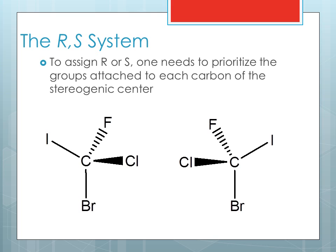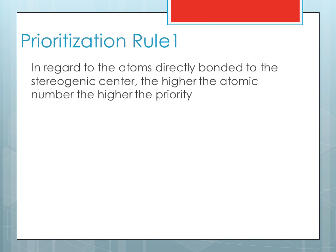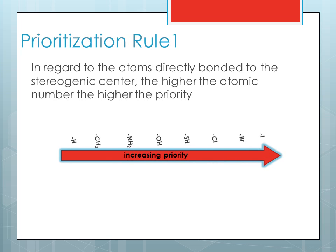The RS system: to assign R or S, one needs to prioritize the groups attached to each carbon of the stereogenic center. The first prioritization rule: in regard to the atoms directly bonded to the stereogenic center, the higher the atomic number, the higher the priority.